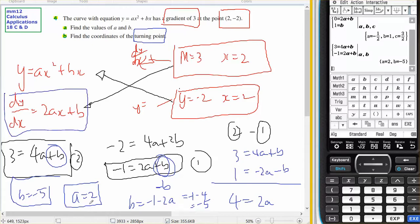So my derivative will be, A equals 2, so my derivative is going to be 4X minus 5. The turning point will be when the gradient is equal to 0. So 0 equals 4X minus 5. Therefore, X equals 5 on 4.